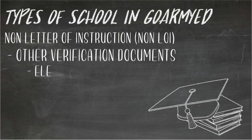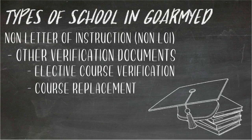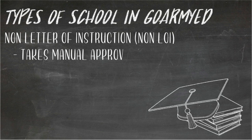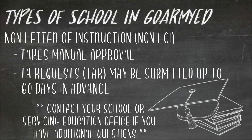Additional verification documents may also be needed for elective courses not listed in the degree plan or course planner, for course replacement if the school recently changed course codes or degree plan requirements, or for soldiers taking courses outside of their homeschool. Because non-LOI TA requests take more time to review and approve, soldiers should submit their TAR as soon as possible — up to 60 days prior to the start date. If documents are missing and the school is on break or holiday, it may be harder to get assistance, so be proactive and contact your school advisors and/or Education Service Office with any questions.